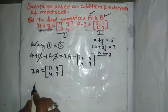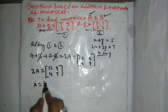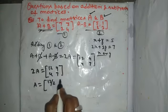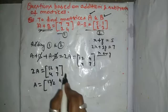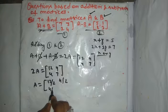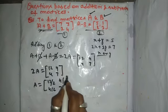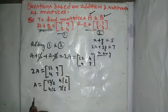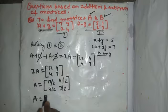So, simple, we will divide it, 12 divided by 2, each element divided by 2, 4 divided by 2 and 7 divided by 2. So, the value of A is what?